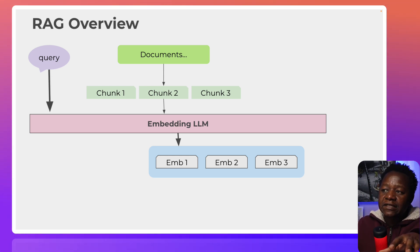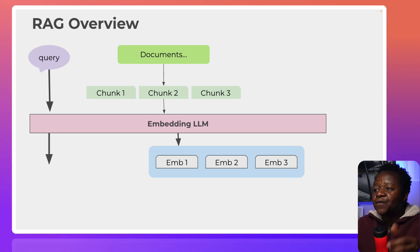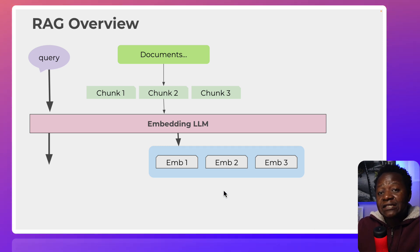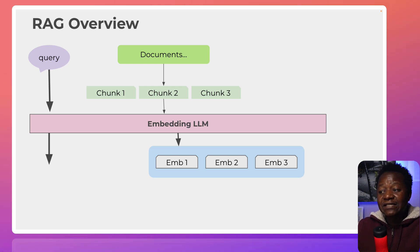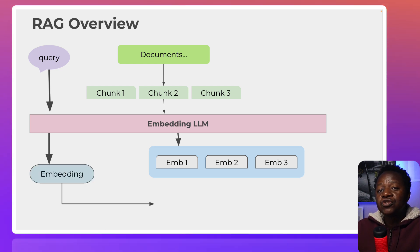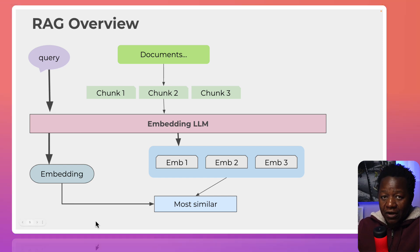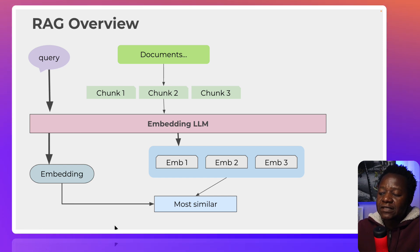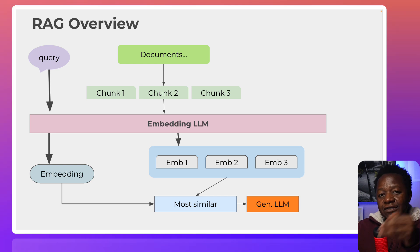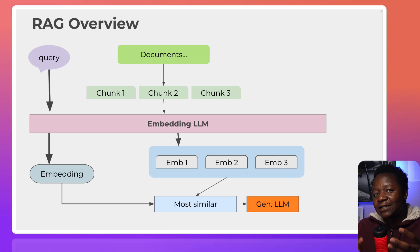In a RAG system, when a user passes in a query or a question, that query also has to go through the process of embedding, because the documents are already embeddings, so the question coming in has to be transformed into embeddings as well. That's what is used to do a similarity search — to find all those similar pieces of data close to the query — and that's passed through the large language model to get a response.